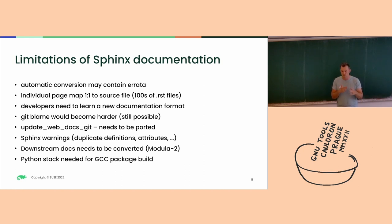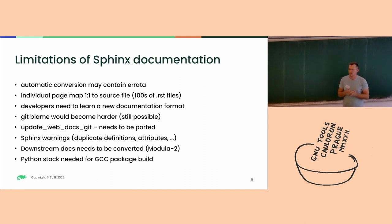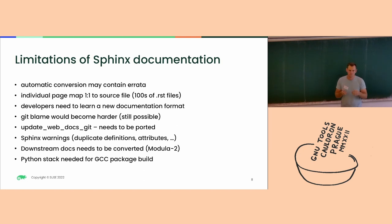There are some projects emerging that would like to be merged into upstream and they might have some texinfo documentation. For Rust it's not a problem, but for Modula-2 there's documentation which contains a couple of hundred pages. We'll eventually get a new dependency for packagers of GCC because Sphinx is using the Python stack — so apart from Perl, which we depend on now, we will also need Python.